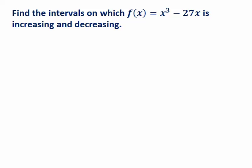Let's look at an example. Here we have the function x cubed minus 27x, and we want to figure out where it's increasing and where it's decreasing by using the derivative. First we take the derivative, which for this function ends up being 3x squared minus 27.